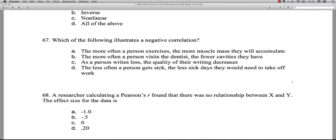And then D, the less often a person gets sick, the less sick days they would need to take off. Again, that is also a positive correlation, but worded with the negative end, meaning the less of one, the less of the other. Again, you're looking for a flip. So it's B. The more you do this one thing, the less you have of the other. So B is an example.